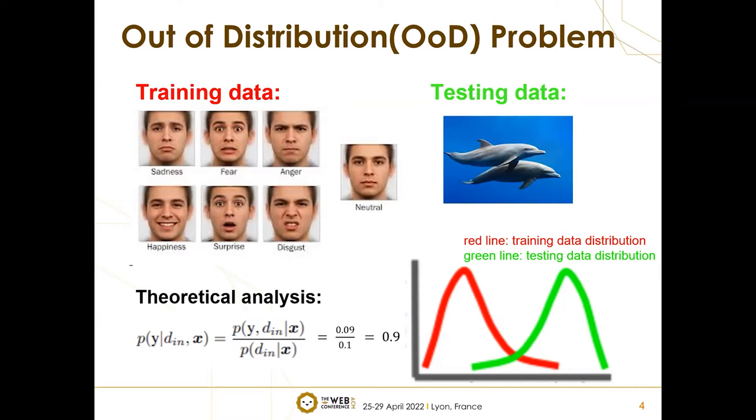However, this model is required to predict the classification of a dolphin's picture. We all know that the model's result will not be reliable, even though it is with high prediction confidence. Generally, when we talk about prediction probability, it infers the probability of output is y under the condition that x belongs to the distribution.